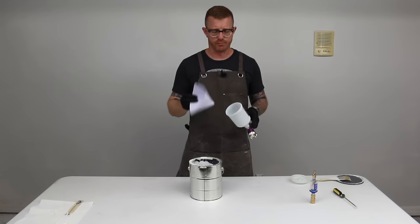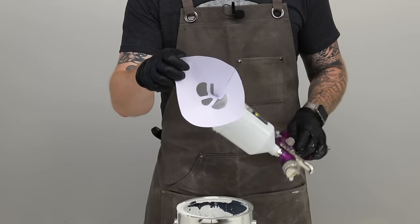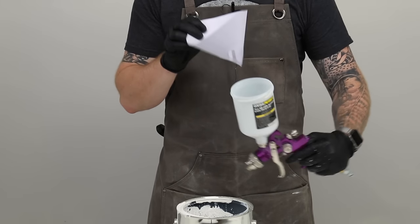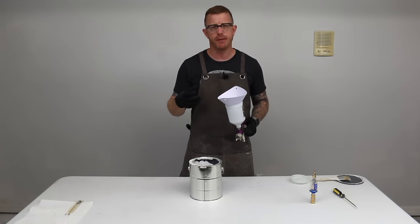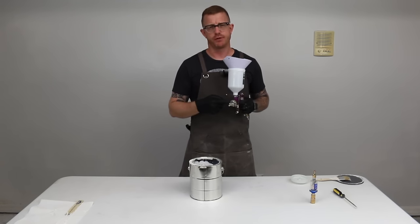Now that your paint is thinned out, you can pour it through a mesh filter into your HVLP cup. It's important to use a filter so it can remove any big chunks of paint or contaminants that would otherwise clog your tip.